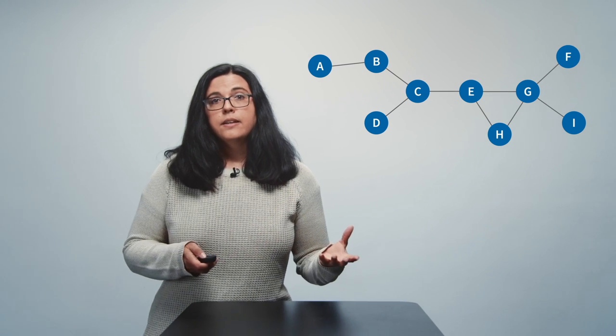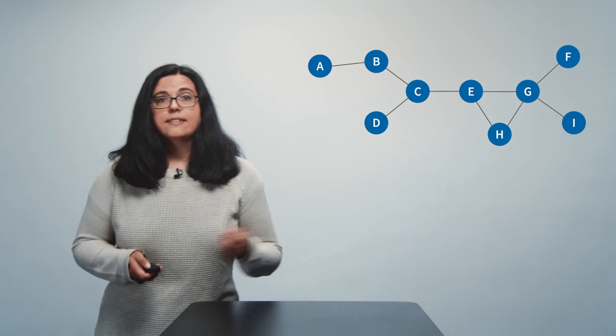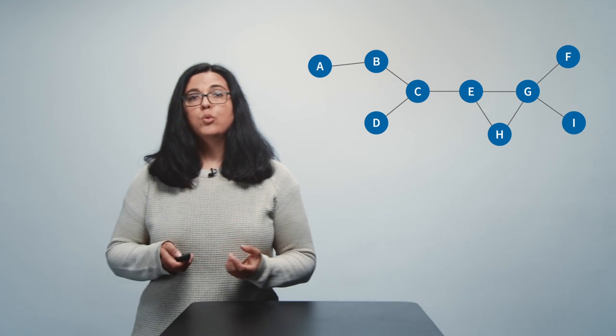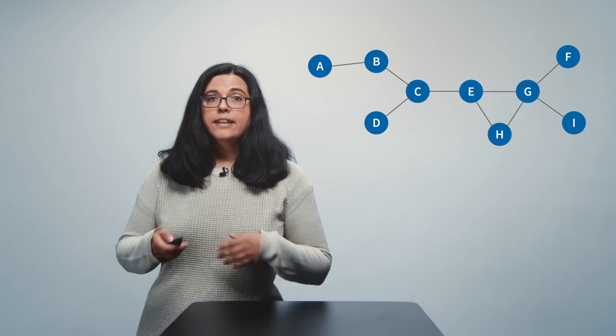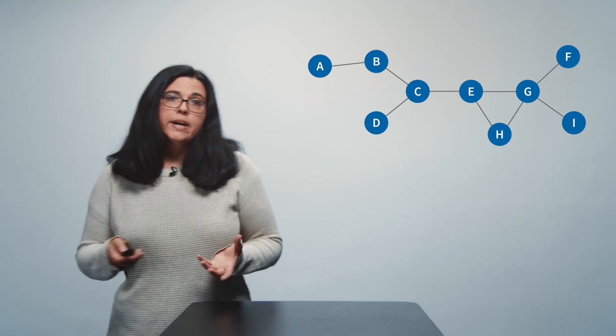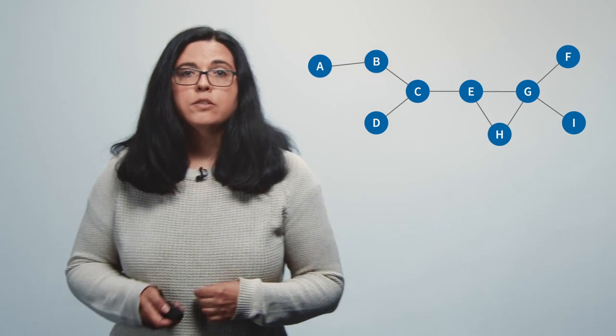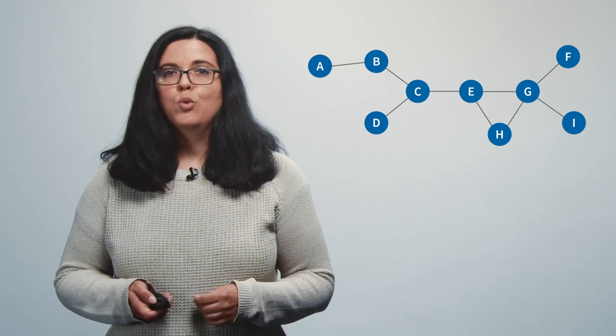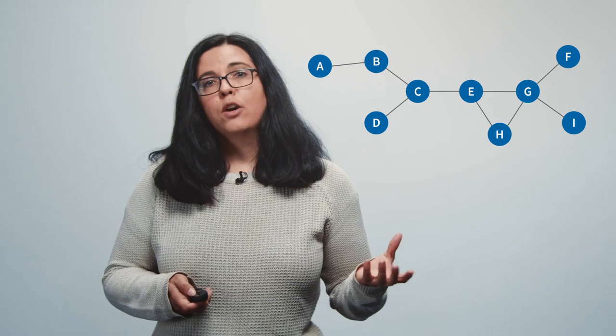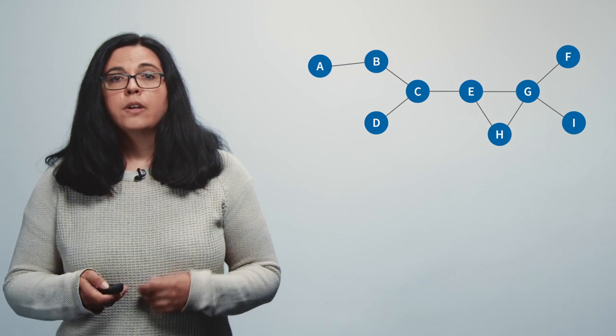For example here in this figure you see an example graph showing nine nodes which are labeled with letters A through I. And we see the edges between them. This small graph might for example represent a quite small class of students and the relationships between them might represent who parties with whom together. So it's a measure maybe of contact outside of the classroom or of information flow between the students.